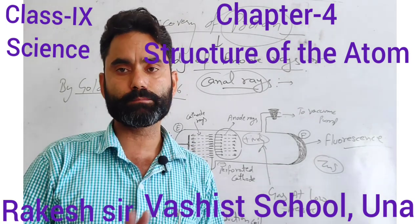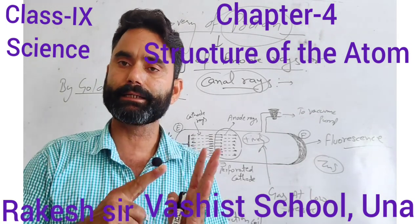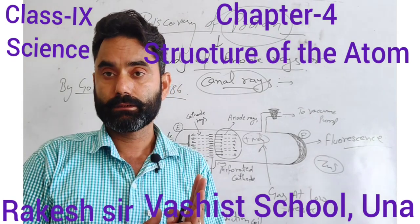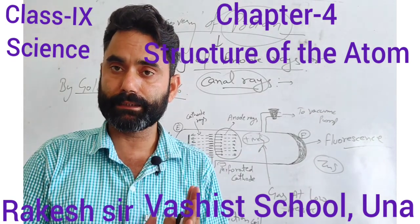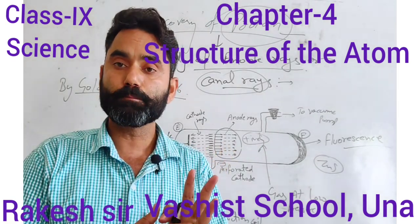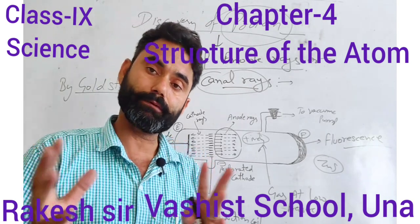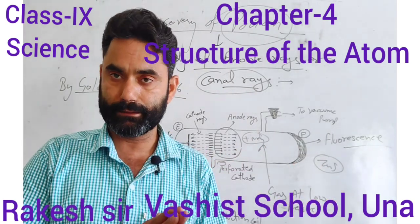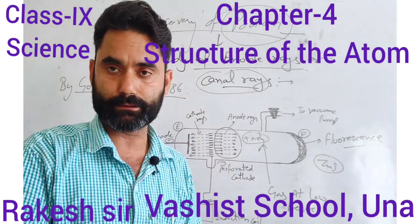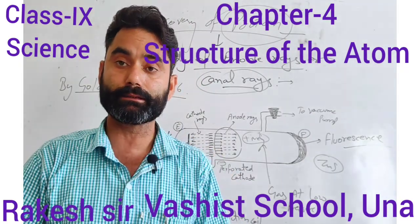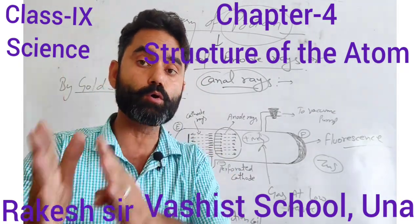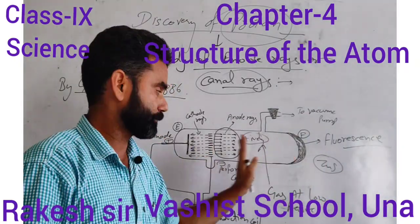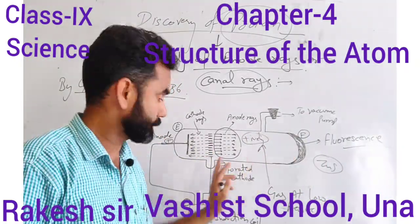The remaining properties are the same as cathode rays: mechanical effect produced, heating effect produced, movement along straight lines. However, they move towards the negative terminal — that is, in the direction from anode to cathode, towards the cathode.